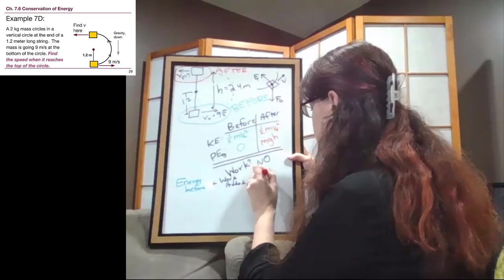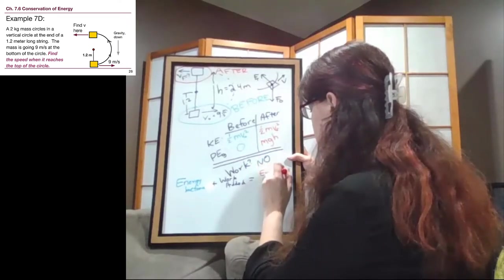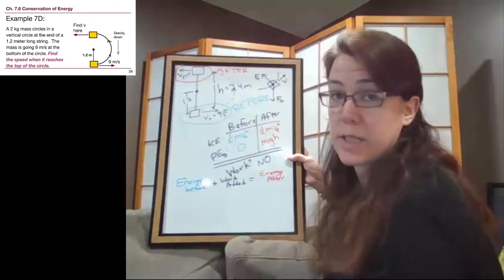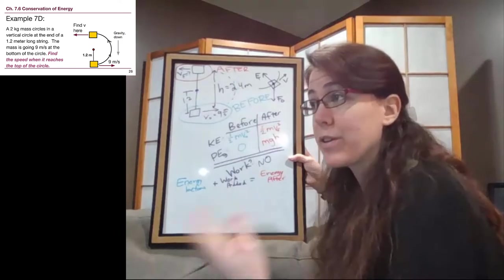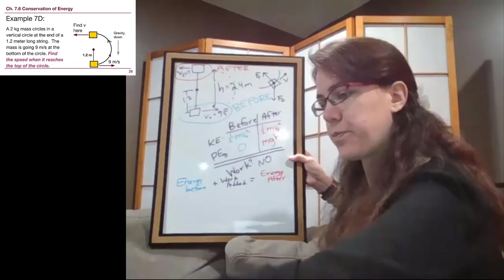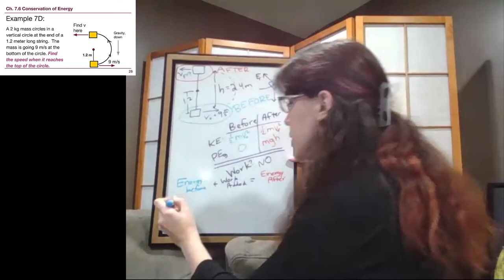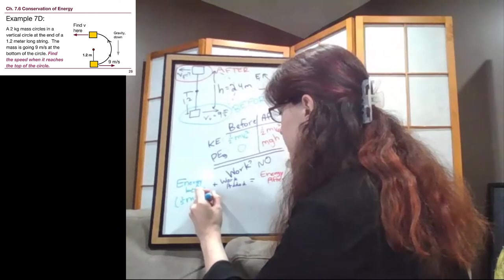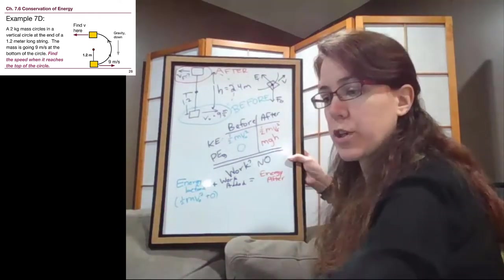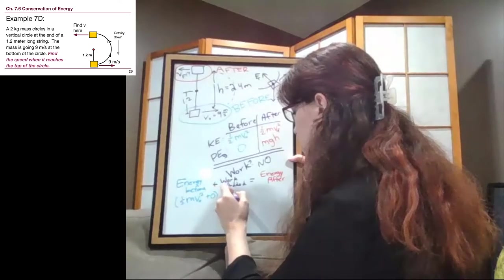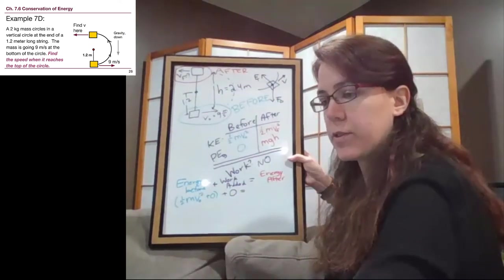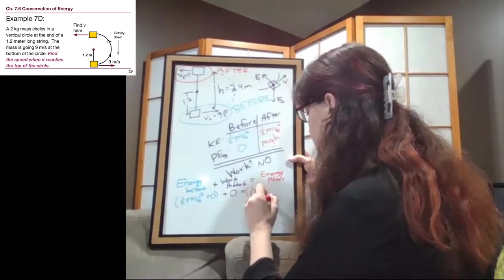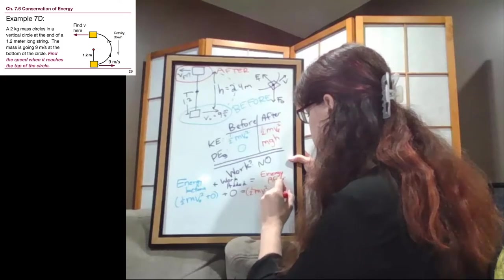And hopefully as you watch all of these videos, you see very clearly this trend of what things we do in every single example. Those are the things that you should be doing in every single example that you do on your own as well. Okay, so for the energy before, we have one half mv initial squared plus zero. For the work term, when we decide that there is no work, we can just add zero. And for energy after, there are two terms. We have one half mv final squared plus mgh.